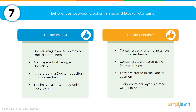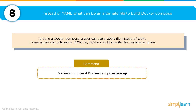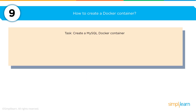A question you'll be asked: instead of YAML, what can be an alternate file to build Docker Compose? YAML is the default, but you can also use JSON. You should get comfortable with JSON, as it is a logical way of doing value-paired matching using a driver script-like syntax.